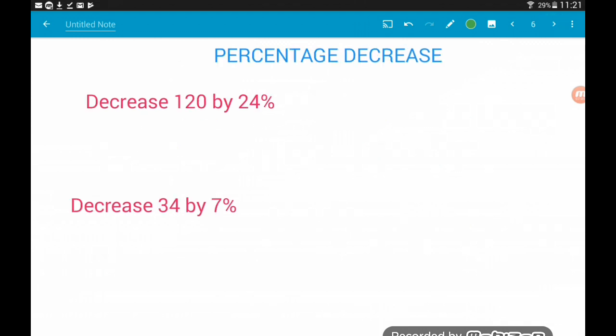So whereas with increasing questions, we added the percent on to 100%, when we decrease, we subtract the percentage from the original 100%. So that's the only difference. So here, decrease 120 by 24%. 120 is our original 100%. So we're starting off with 100%. Now we're decreasing by 24%. So we take away 24%. And that leaves us with 76%. Now we use the decimal equivalent of 76%, which is 0.76. So we do 0.76 times 120. And that leaves us with 91.2.